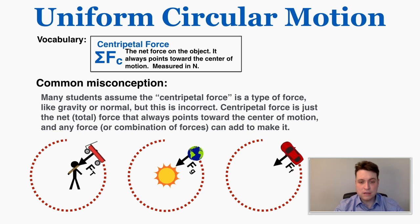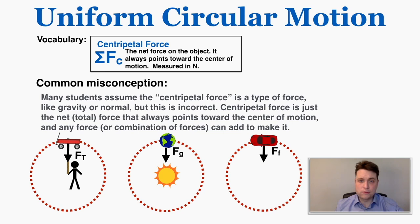As an example, when Earth is orbiting around the sun, gravity is the centripetal force. So centripetal force is just a name we give to whatever force happens to be pointing toward the center constantly. There's no such thing as a type of force called centripetal force — it's always made up of other types of forces.